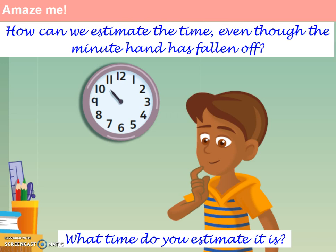Opening up our textbook, we can see our first question, which relates to the clock on the wall. Question 1A: how can we estimate the time even though the minute hand has fallen off? I want you to think about firstly how many minutes there are in an hour, and secondly how many minutes it takes for the hour hand to move between one number on the clock and the next. For question 1B, I'm asking what time you estimate is on the clock on the wall — think about where the hour hand is pointing, what number it has passed, and what number it is trying to reach.